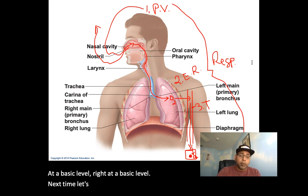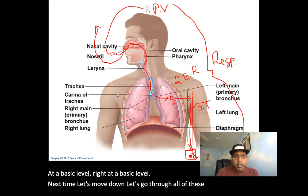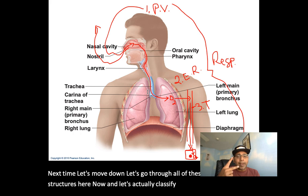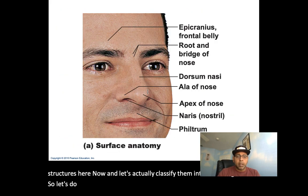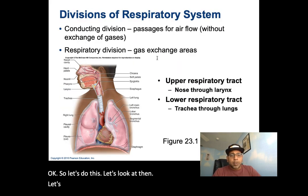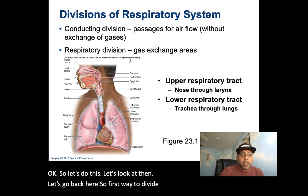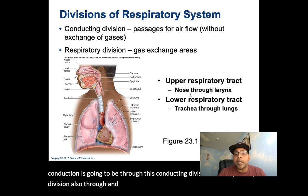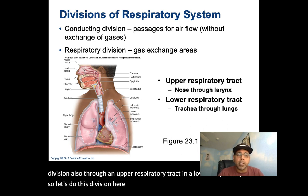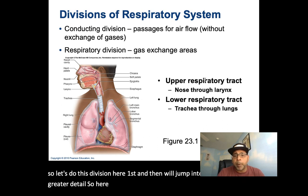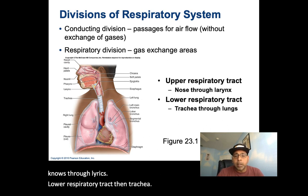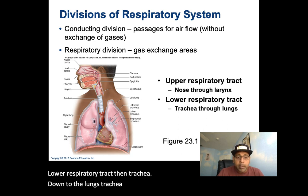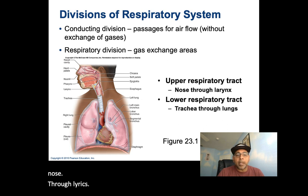Let's go through all these different structures and classify them into two categories. First, we can divide them into a conducting division and a respiratory division, and also into an upper respiratory tract and a lower respiratory tract. The upper respiratory tract goes from the nose through the larynx. The lower respiratory tract goes from the trachea down through the lungs.